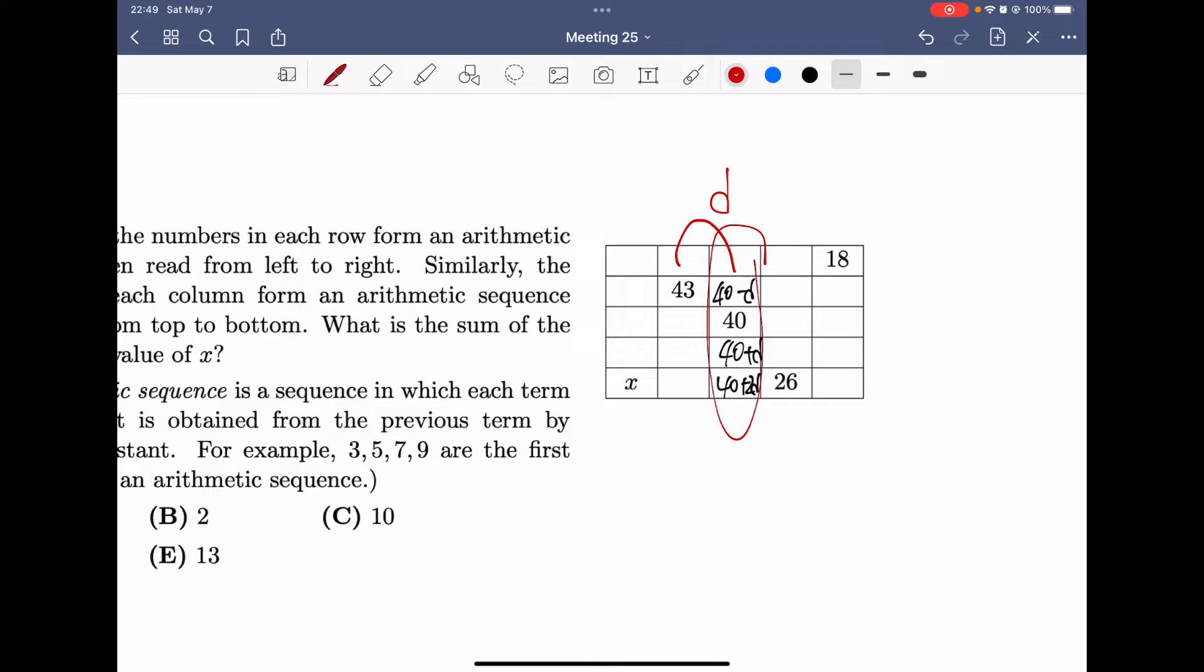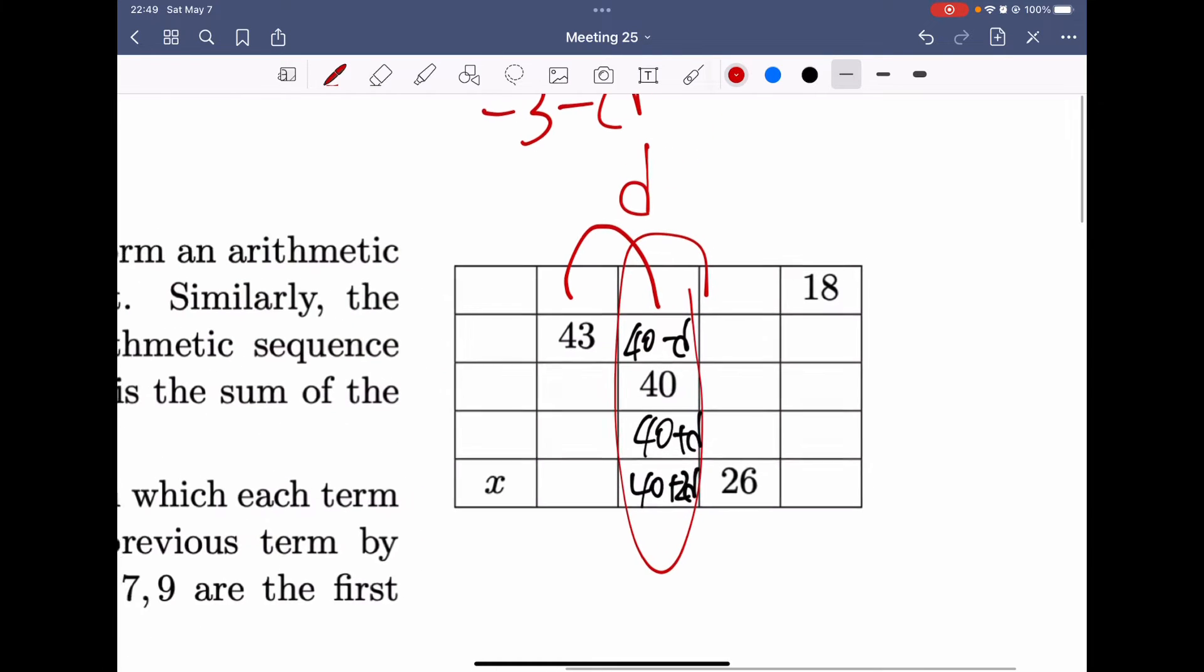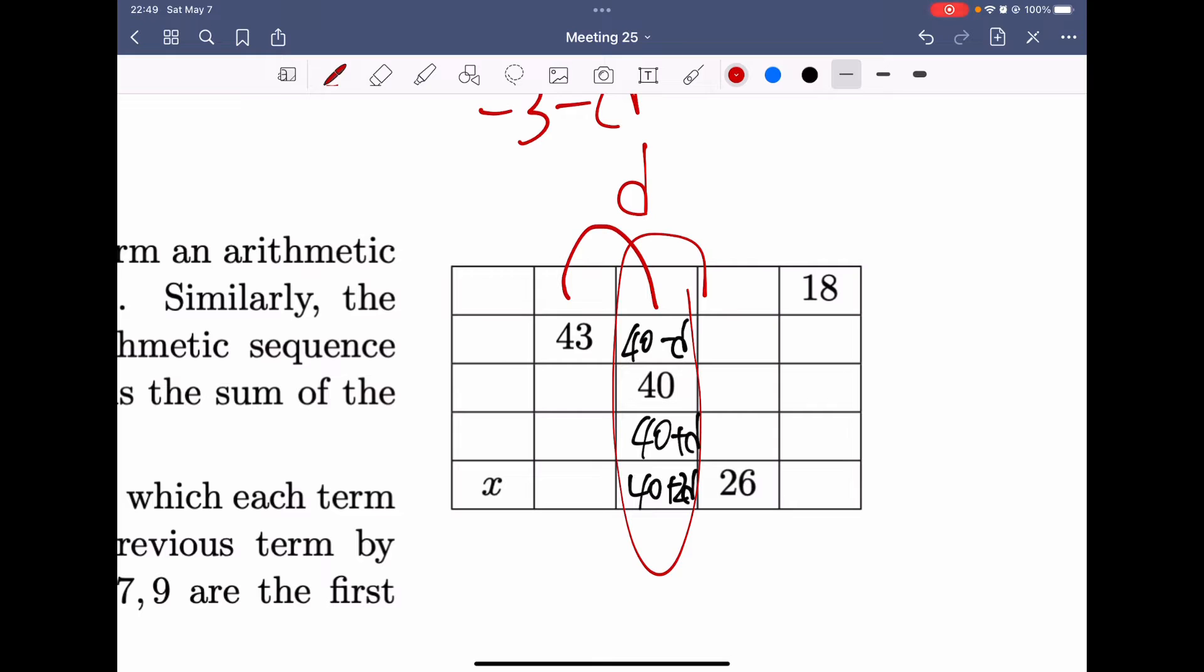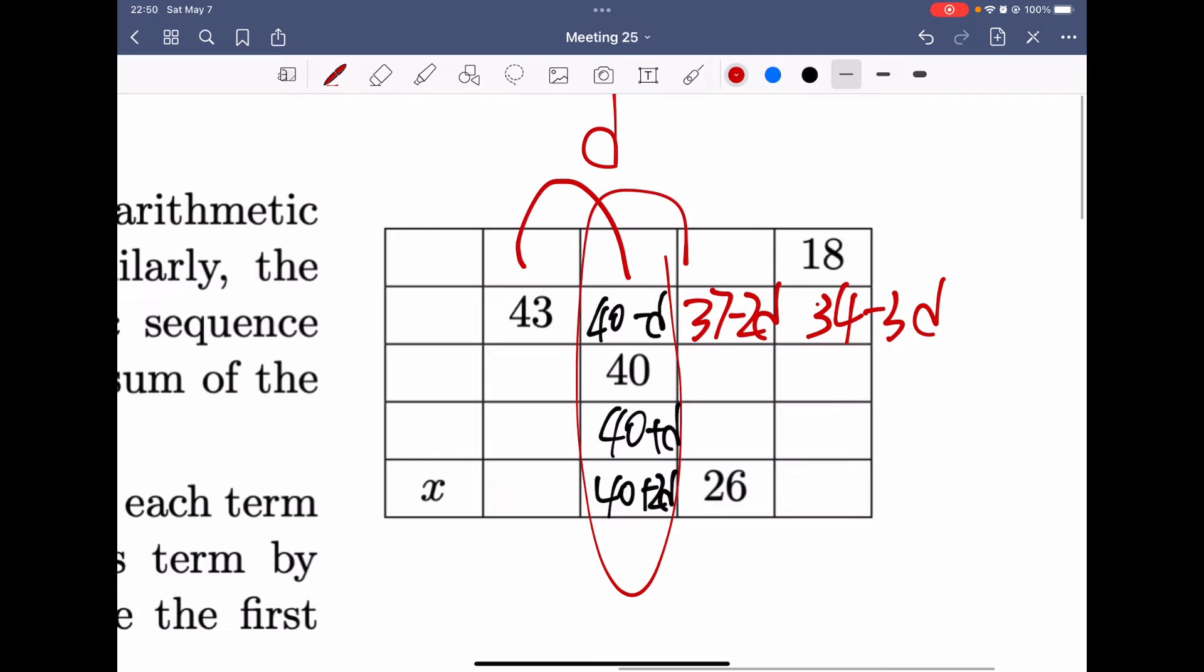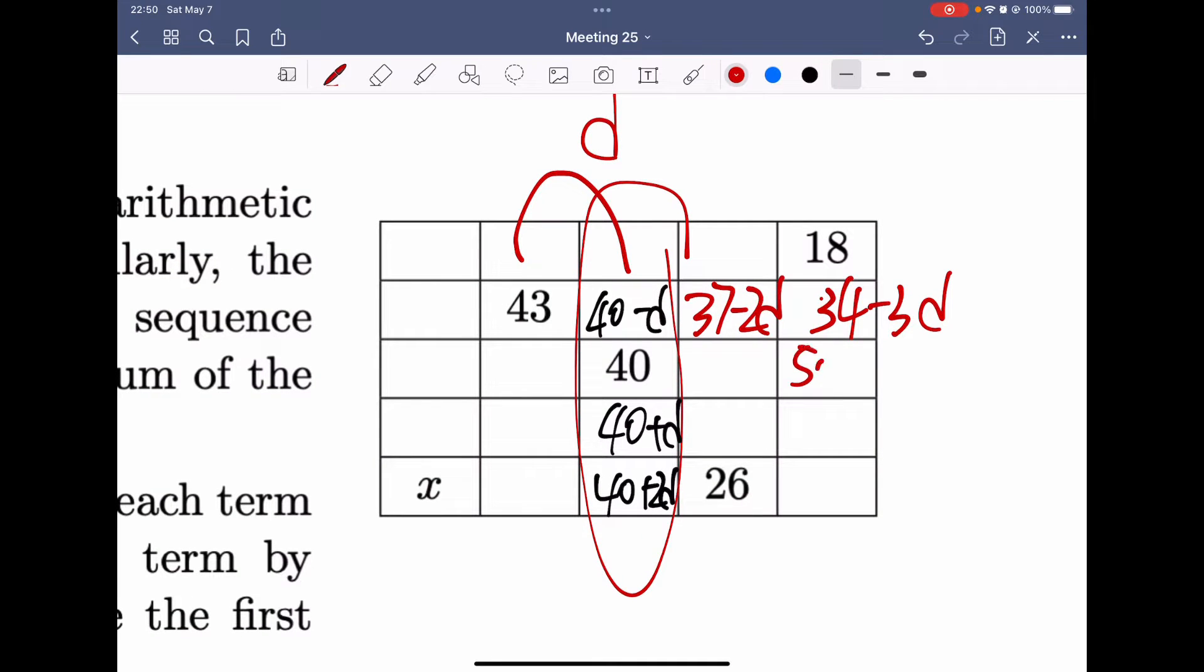So, therefore, the number above 40 we could say is 40 minus D, and the number below 40 is 40 plus D, and here is 40 plus 2D. Okay, because this row should also form an arithmetic sequence. And we find the common term here, which is minus 3 minus D. So, therefore, we can get the rest of the terms in this row. There are 37 minus 2D, and 34 minus 3D. Same idea, this column is an arithmetic sequence, and therefore, it's 50 minus 6D, and 66 minus 9D, and 82 minus 12D.